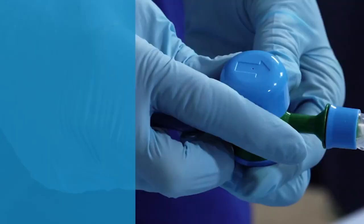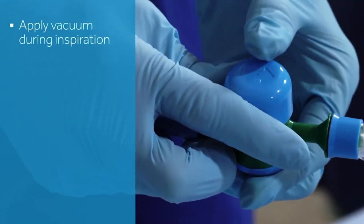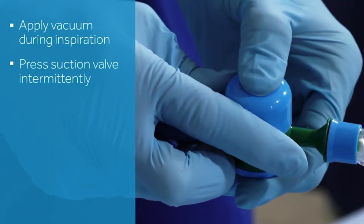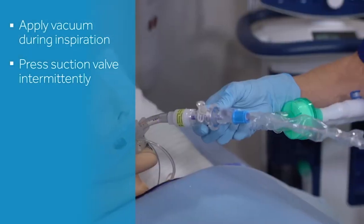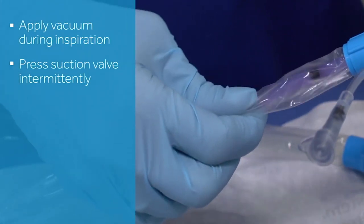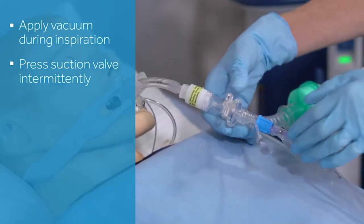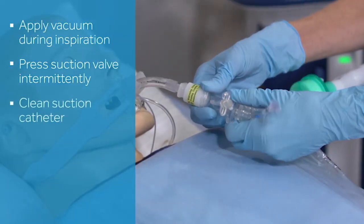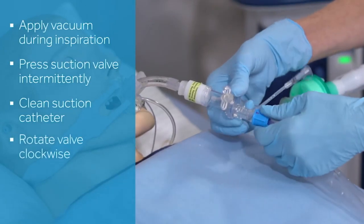Apply vacuum during the inspiratory phase by pressing the suction valve intermittently while withdrawing the suction catheter until the black marking is clearly visible. To isolate the system or clean the suction catheter, rotate the patient access valve clockwise.